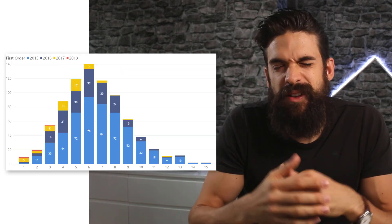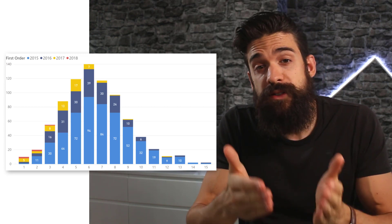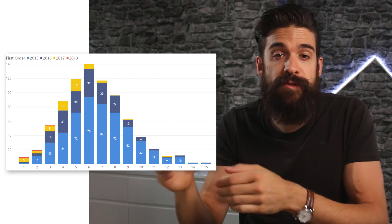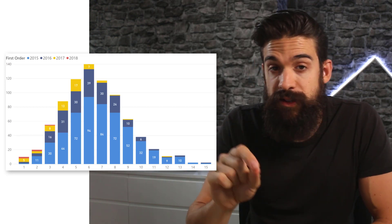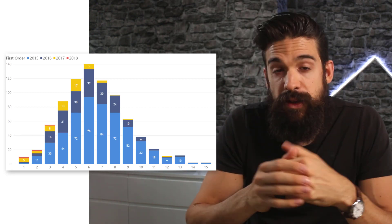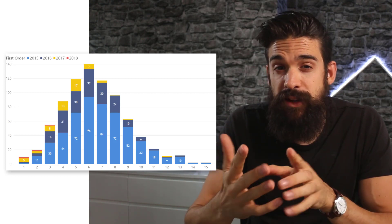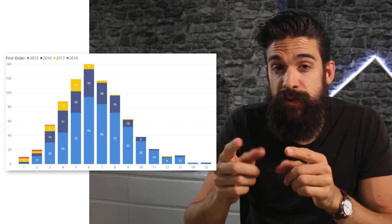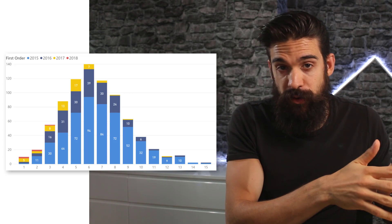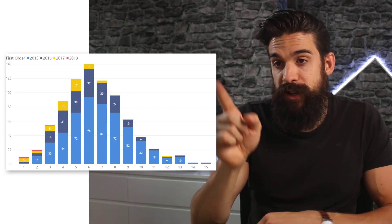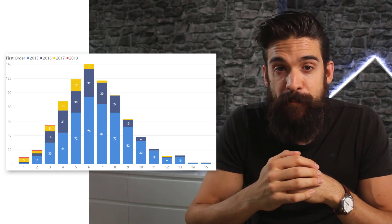Then we're going to take it one step further and create cohorts on the basis of the number of orders that each customer placed. We can use that in combination with the information on when the customer placed the first order, so that we can recreate the chart that you see here.